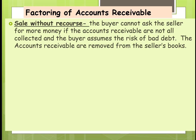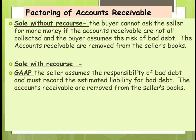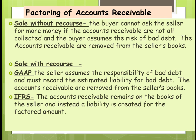The accounts receivable are removed from the seller's books in a sale without recourse. In a sale with recourse under GAAP, the seller assumes responsibility for bad debt and must record the estimated liability for bad debt, and the accounts receivable are removed from the seller's books. Under international standards, the accounts receivable remains on the books of the seller and instead a liability is created for the factored amount.